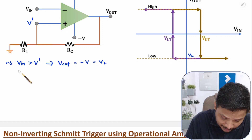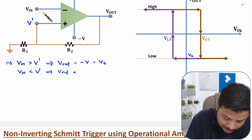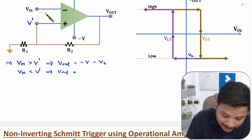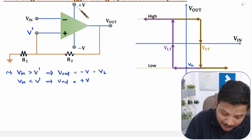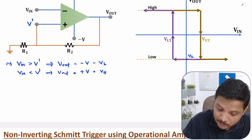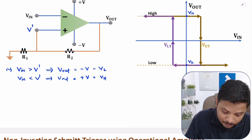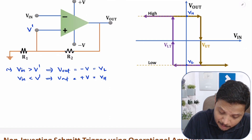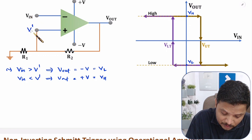In the second situation, if VIN is lower than V', then positive is greater than negative, so the output saturates towards plus V — the higher voltage VH. Now we need to understand the value of V', because the transitions from high to low and low to high happen when VIN crosses V'. V' is calculated at the non-inverting terminal. By the potential divider rule: V' = VOUT × R1 / (R1 + R2). So VUT and VLT are based on comparing VIN with V'.